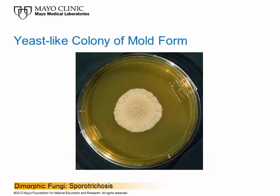Here you see another yeast-like colony of Sporothrix schenckii. The name Sporothrix schenckii came from the following description: when you look at it under the microscope, the spores are produced and attached to a central hyphal filament by a thread-like attachment — 'sporo' refers to spore, 'thrix' refers to a hair or thread-like attachment, and 'schenckii' refers to Dr. Schenck in Baltimore, who first named this organism.